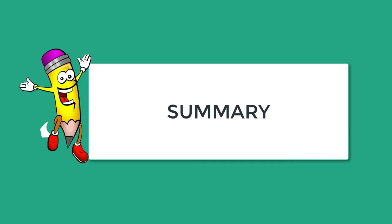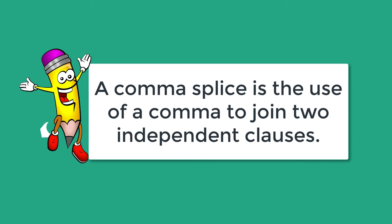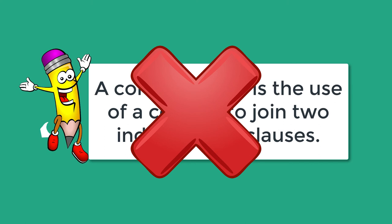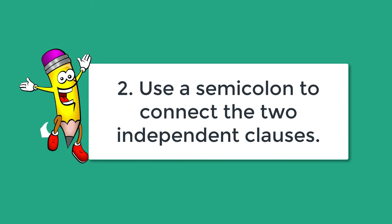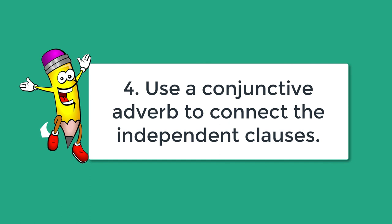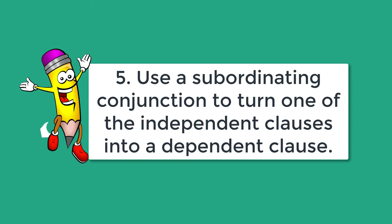To summarize, a comma splice is the use of a comma to join two independent clauses. This is considered an error because this is not the function of a comma — commas are not used to join two independent clauses. The five ways to fix a comma splice: one, separate the two independent clauses with a period; two, use a semicolon to connect the two independent clauses; three, use a coordinating conjunction; four, use a conjunctive adverb; and five, use a subordinate conjunction to make the sentence a subordinate clause.